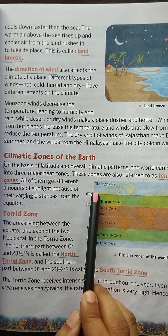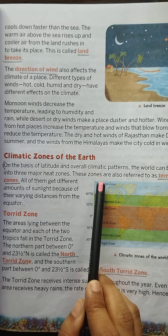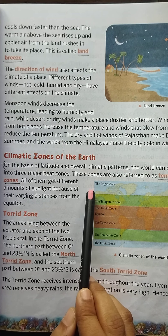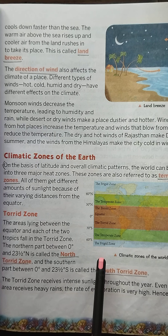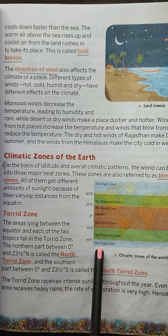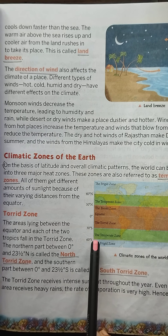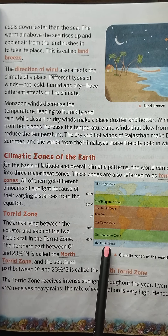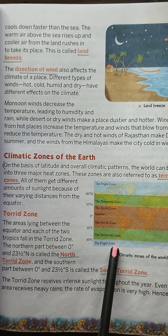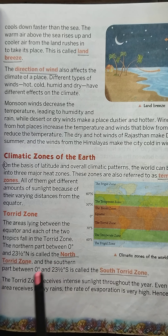The area between the Arctic Circle and the North Pole — from 66.5 degrees north latitude to 90 degrees north latitude — is known as the North Frigid Zone. The area from 66.5 degrees south latitude to 90 degrees south, from the Antarctic Circle to the South Pole, is known as the South Frigid Zone in the Southern Hemisphere.